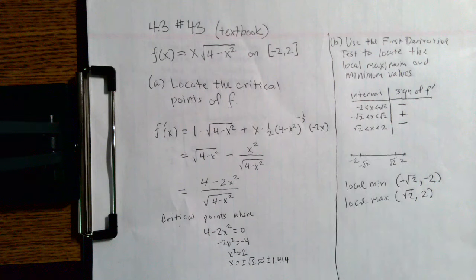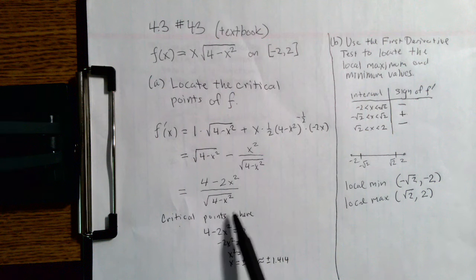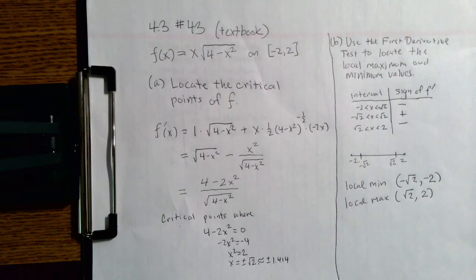For example, in that middle interval, it makes perfect sense to use zero because zero is often very easy to work with. We're substituting into the first derivative, and when we plug in zero, we find that we get a positive sign.